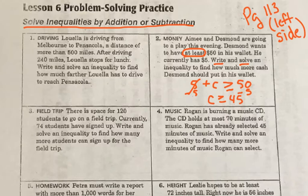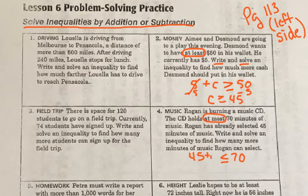Let's do number four. Rogan is burning a music CD. The CD holds at most 70 minutes of music. 'At most' is opposite of 'at least,' so when we see 'at most 70 minutes,' that's the total. Rogan has already selected 45 minutes, and we need to know how many more minutes he can have so he doesn't go over 70 minutes. We subtract 45 from both sides, and we get M is less than or equal to 25.